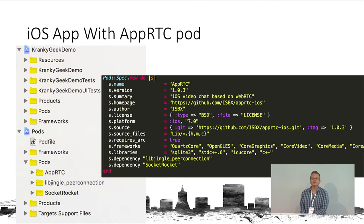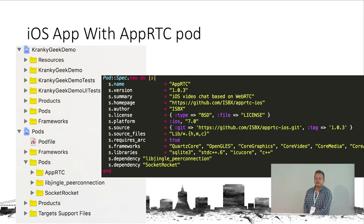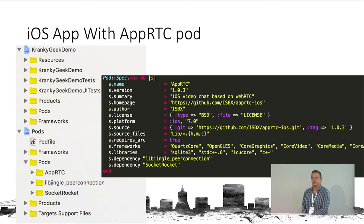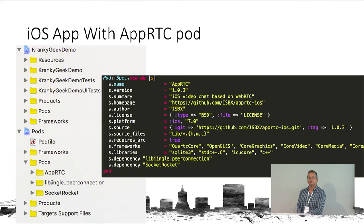Looking at the pod itself, you can see the GitHub path for the AppRTC pod, the frameworks needed to build an application using that pod, the iOS frameworks, the native libraries you will compile with, and the two dependencies: lib jingle connection and socket rocket.